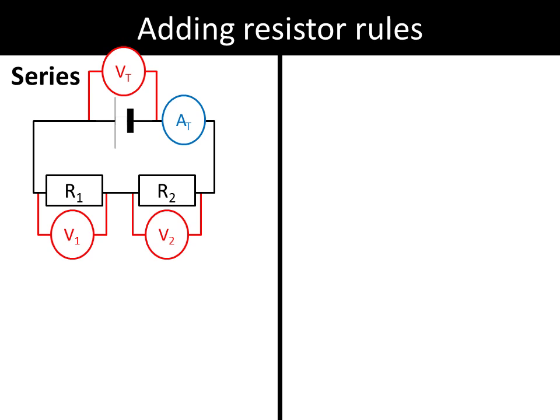For a series circuit we know because the current has no option other than to go around the entire circuit, it has no alternative routes it can take. We know current is the same all the way around. Now the voltage we know, the terminal voltage is actually the total, it's shared across the two resistors. So V1 plus V2 equals Vt.